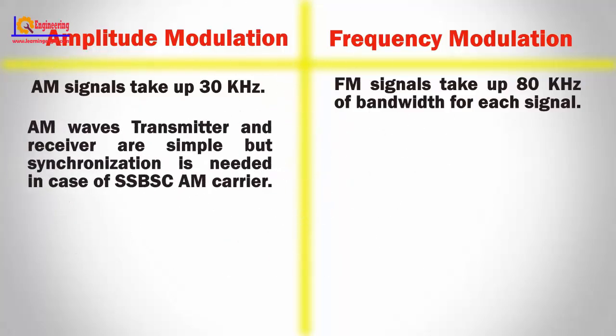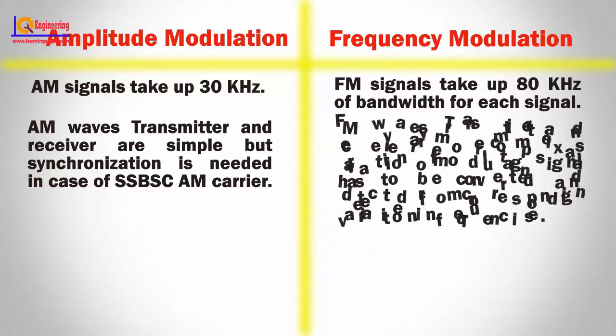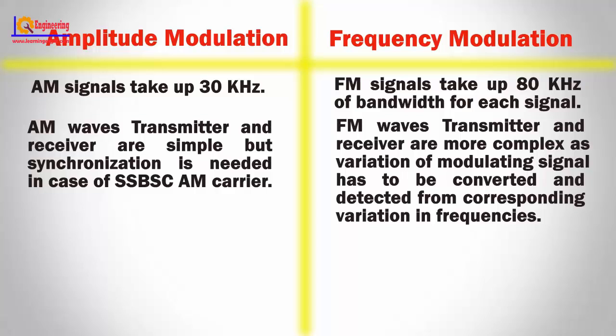AM transmitter and receiver can simply vary; synchronization is needed in the case of SSBSC AM carrier. Whereas the transmitter and receiver for FM are more complex, as the variation of the modulating signal has to be converted and detected as a corresponding variation in frequencies.